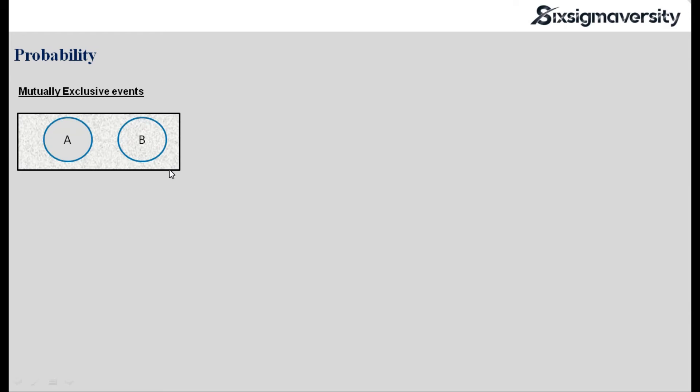Few more concepts on probability: mutually exclusive events. If we have two events A and B and there is no intersection between the two, both are mutually exclusive. So if I do a probability of A and B — that is the A intersection B — I will get a probability of 0. This is called mutually exclusive events.